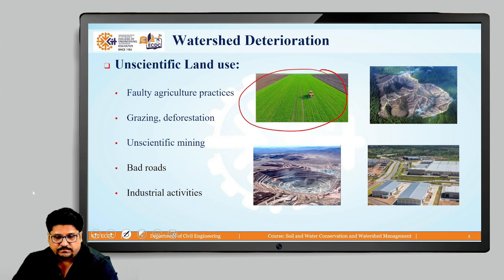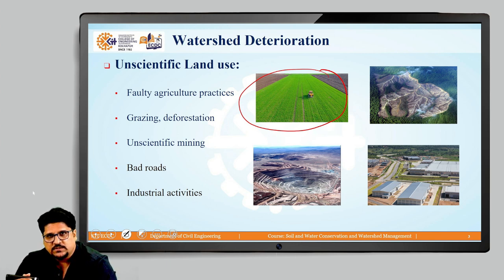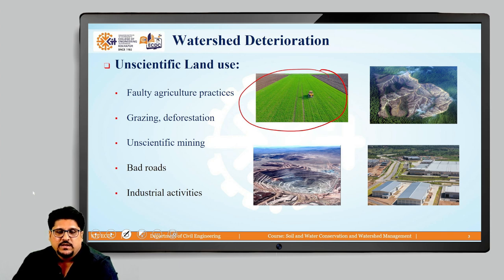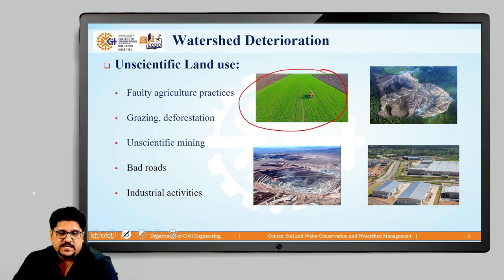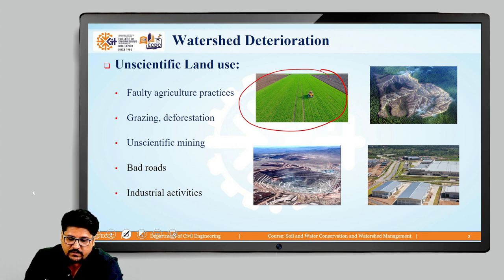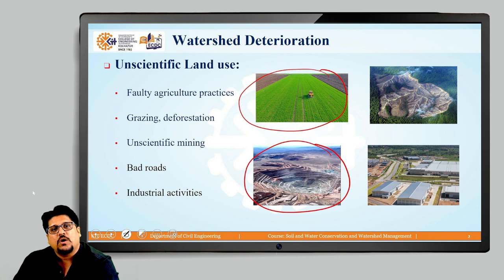Other resources like minerals: within mining and geological features, different types of rocks and rich stones are available. If unscientific mining or quarrying is conducted within the watershed, watershed deterioration takes place. This picture represents the uncontrolled or unscientific mining activities which have been conducted in a particular watershed.